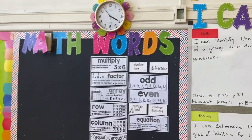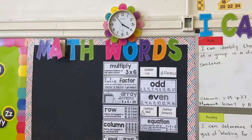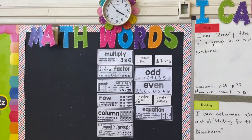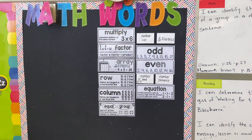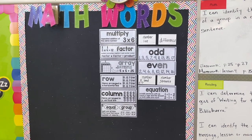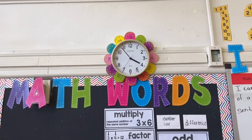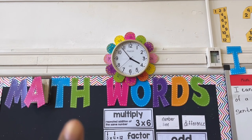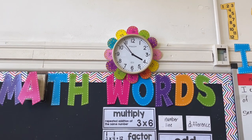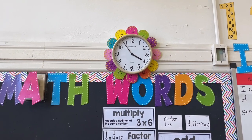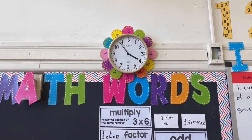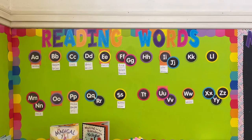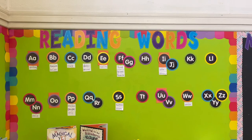Here we have our math word wall. As you can see, we're focusing on multiplication thus far. And then I have my clock — I've added a scaffold here where the petals are the skip counts by five around the clock. And this is our reading word wall.